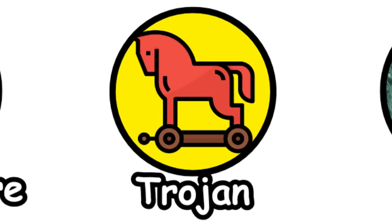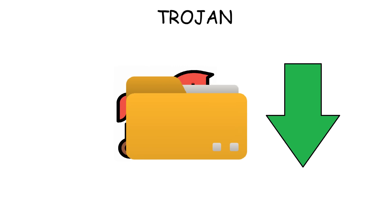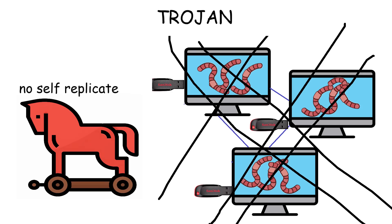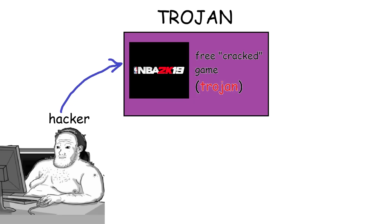A Trojan is a type of malware that disguises itself as a legitimate file or program to trick users into downloading and installing it. Unlike worms, Trojans do not self-replicate. Instead, they rely on social engineering. A hacker may create a fake, cracked version of a game and upload it to shady websites.